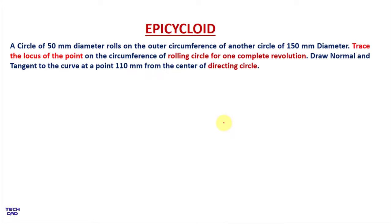Hello students, in this video we are going to make an epicycloid. When you make an epicycloid, you have two circles: first is the rolling circle and another is the directing circle. A circle of 50 mm diameter rolls on the outer circumference of another circle of 150 mm diameter — this is the directing circle. Trace the locus of the point on the circumference of the rolling circle for one complete revolution.